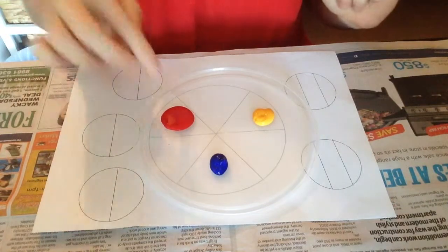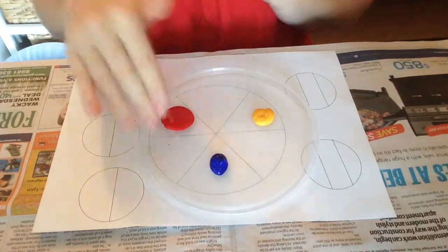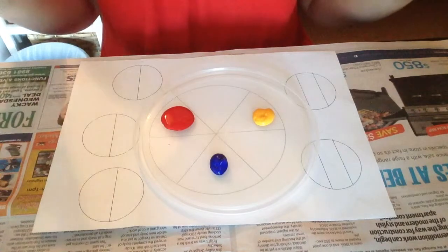So our primary colors are red, blue and yellow. With these three colors we can mix any color in the rainbow.